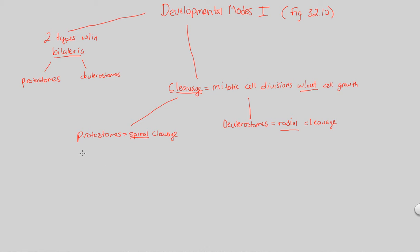What does spiral cleavage encompass? The idea of spiral cleavage is that you're going to have planes of cell division that are diagonal to the vertical axis of the embryo. Looking at figure 32.10, you'll very easily be able to see the diagonal arrangement of spiral cleavage. The major thing to remember: spiral cleavage means diagonal cell divisions.